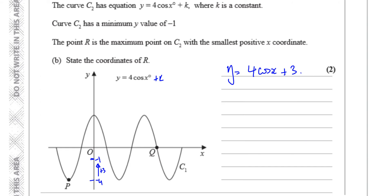It says the point R is the maximum point on C2 with the smallest positive x coordinate. The maximum is where it reaches the top of its curve. The first such maximum point occurs at 360 degrees. Note that 0 is also a maximum point, but 0 is not a positive number, so the smallest positive x coordinate is 360 degrees.